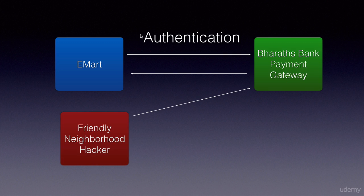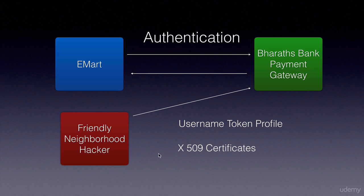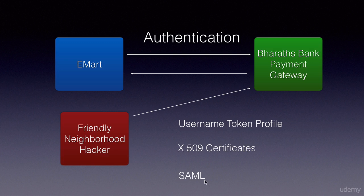Only then will the bank respond. In the WS Security standard, there are three ways to do authentication: using username token profile, X.509 certificates, and SAML. SAML is used for single sign-on — that is, within our organization if we have multiple web service provider applications, and we want our clients to log into one application and be able to access any other web service application without logging in again, we can do that using SAML.